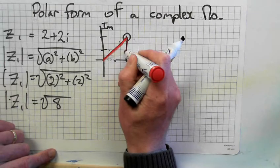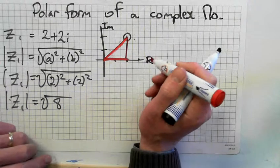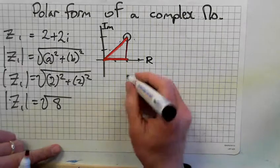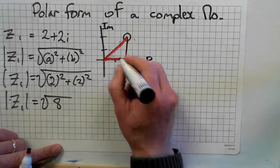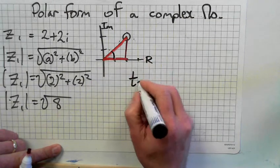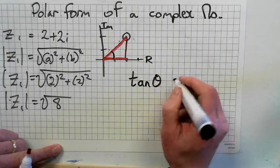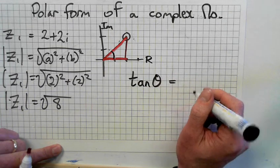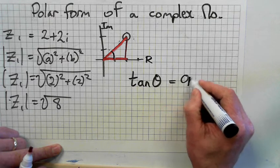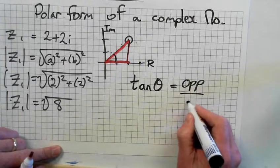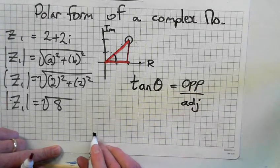We're looking at this triangle here. The tan formula - we're looking for this angle. Tan theta, what's the formula for tan? Opposite over adjacent.